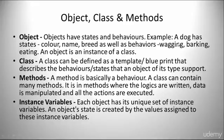When it comes to objects, objects have states and behaviors. An example is a dog has states such as color, name, and a breed, and it also has behaviors such as wagging its tail, barking at strangers, and even eating.